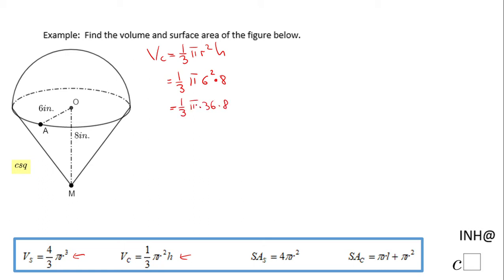I suggest you simplify where possible. Three goes into 36 twelve times, and 12 times 8 is 96. Don't forget the π — the volume of the cone is 96π.